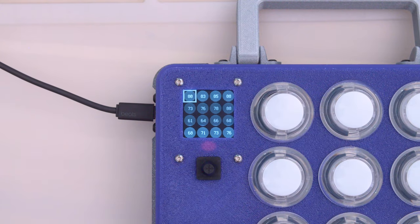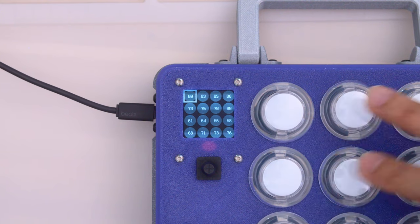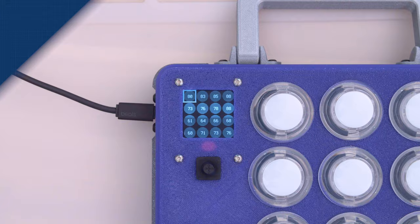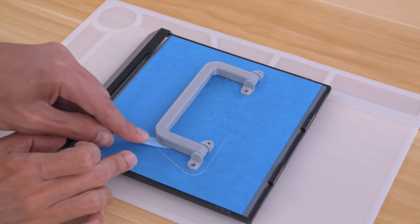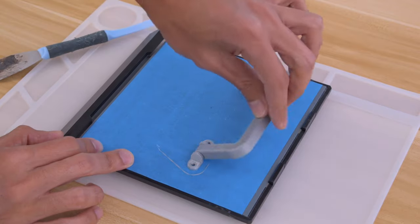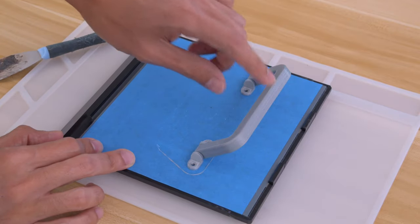The handle is 3D printed as a single part and features two built-in hinges. It's a print-in-place part that doesn't need any support material. The hinges are able to freely rotate and it features mounting holes for attaching to the case.